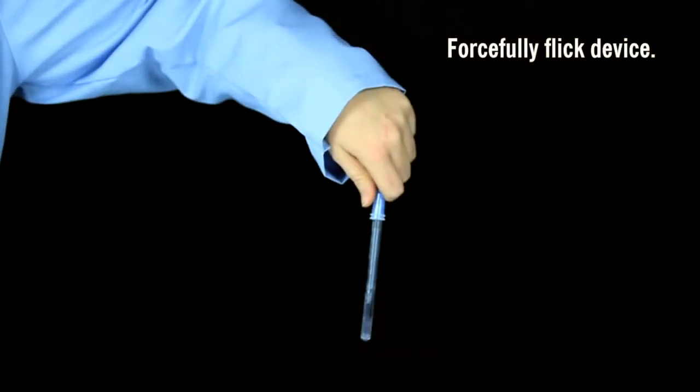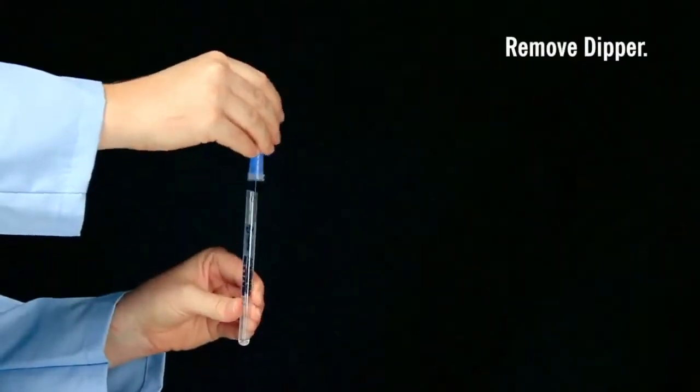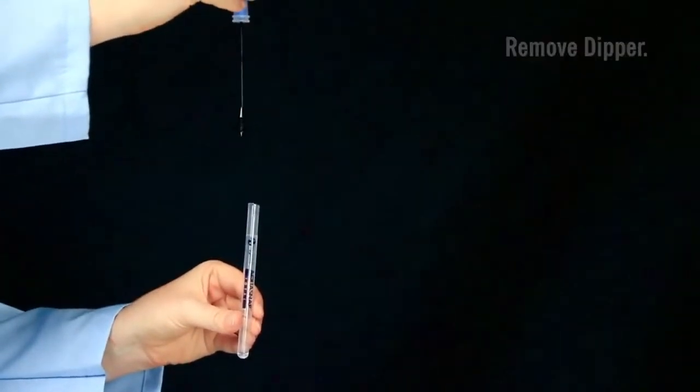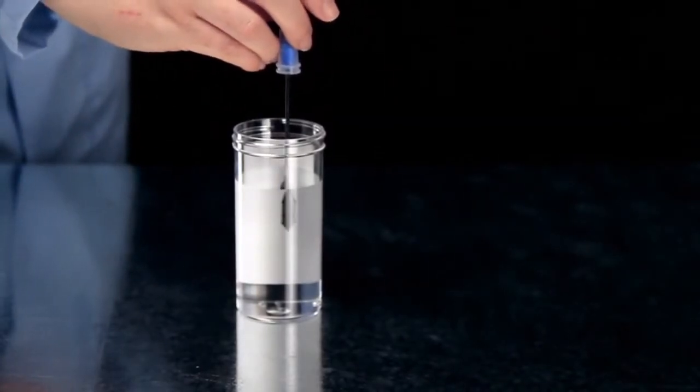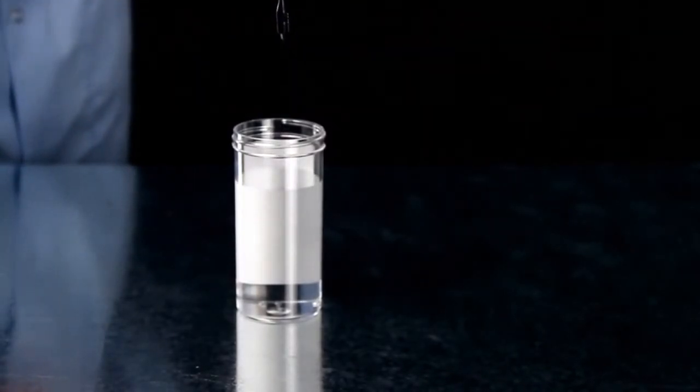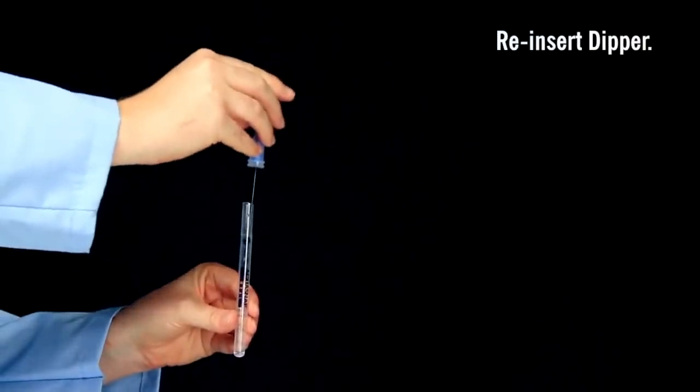Before opening the device, forcefully flick Aquasnap in a downward motion to release the extractant liquid from the dipper tip. You may now remove the dipper from the tube. Submerge the sample collection tip in the water sample for one to two seconds. Do not swirl. Replace the dipper in the tube.